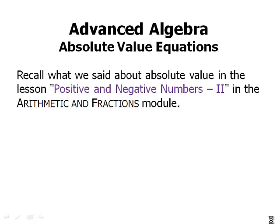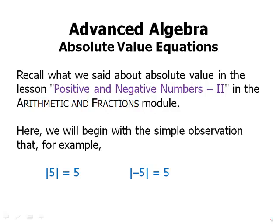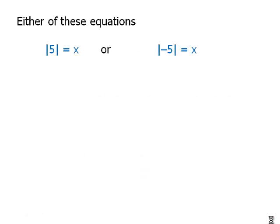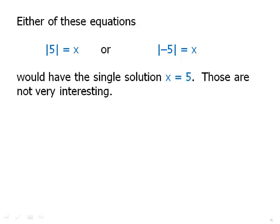We'll begin with a simple observation: the absolute value of positive five is of course positive five, and the absolute value of negative five is also positive five. So either of the equations |5| = x or |-5| = x would have the single solution x equals five.